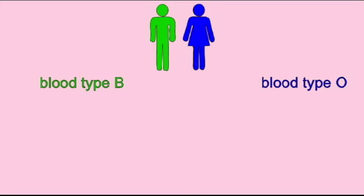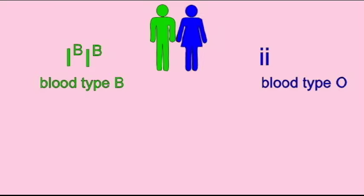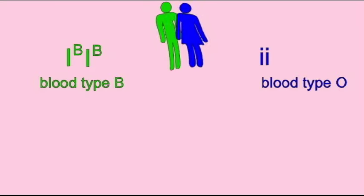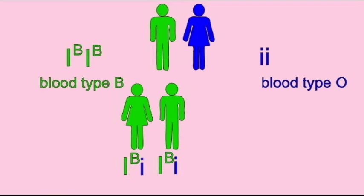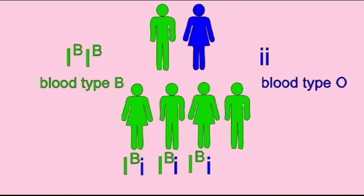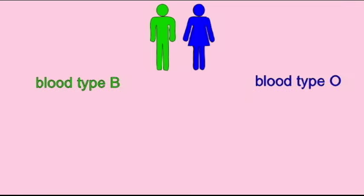Like blood type A, blood type B alleles are also dominant to O. So if an individual has two alleles for blood type B and is homozygous, they will give all of their children an allele for being blood type B. Since B is dominant to O, if the other parent is blood type O, all of the children receive a B allele from one parent and an O allele from the second, and all of them will be blood type B.